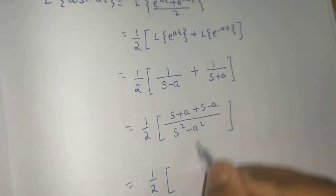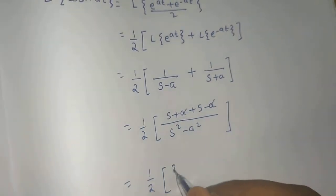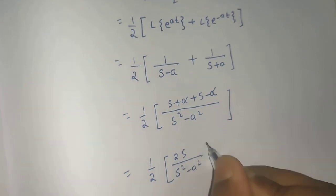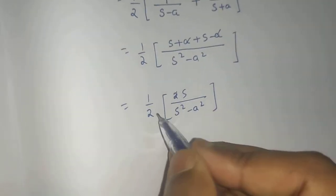So this is 1/2. a and a get cancelled. You are left with 2s divided by s squared minus a squared. 2 and 2 get cancelled.